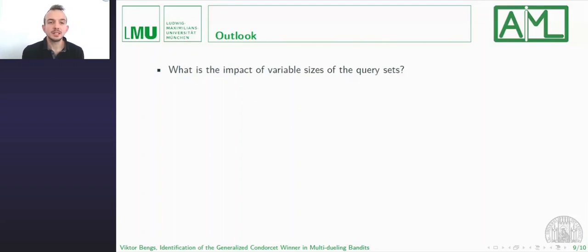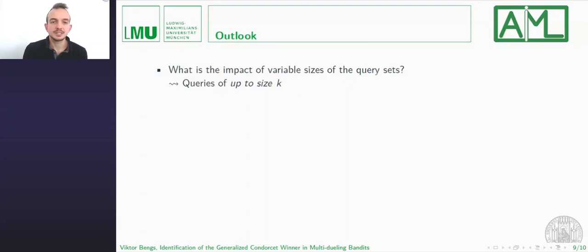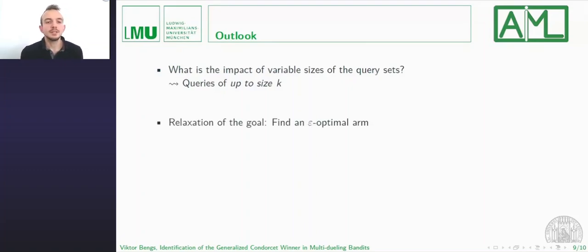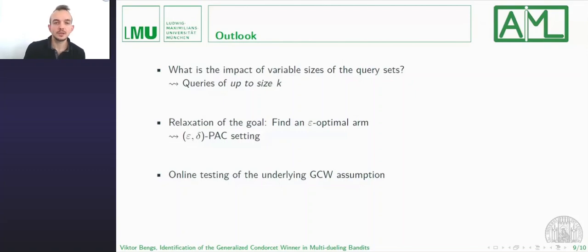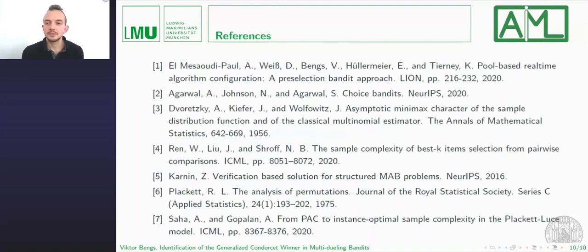As for future work, we want to investigate the impact of subset size — what happens if we can conduct multi-duels of up to size k. We also want to relax the goal to finding an epsilon-optimal generalized Condorcet winner, moving into an epsilon-delta PAC learning scenario. Finally, we assumed the generalized Condorcet winner exists, which might be violated, so it would be interesting to test this assumption in an online manner. Thanks for your attention and hope to see you at the poster session.